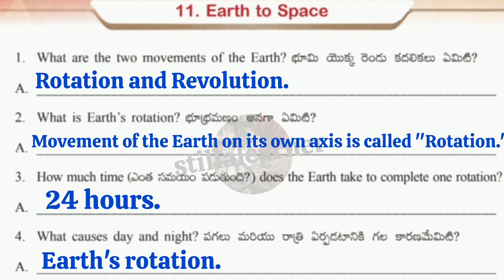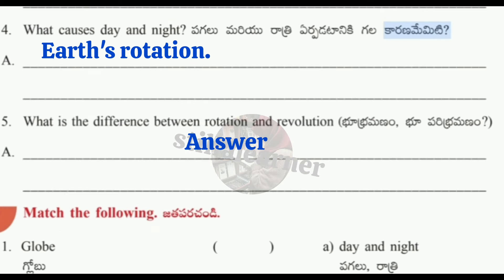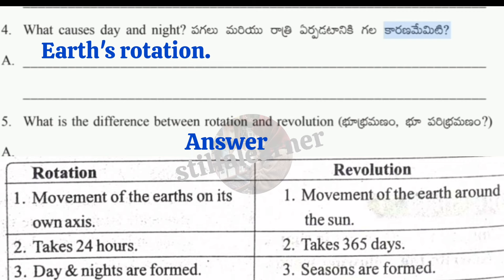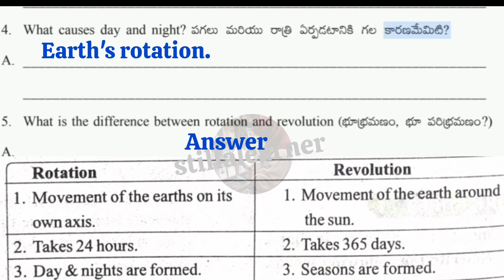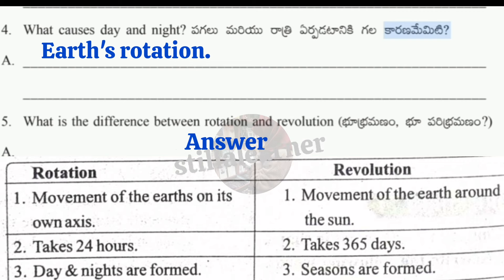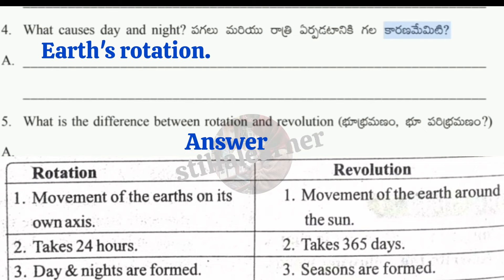Make sure to end each answer with a full stop. Difference between rotation and revolution: Rotation — movement of earth on its own axis, takes 24 hours, day and night are formed. Revolution — movement of earth around the sun, takes 365 days, seasons are formed.